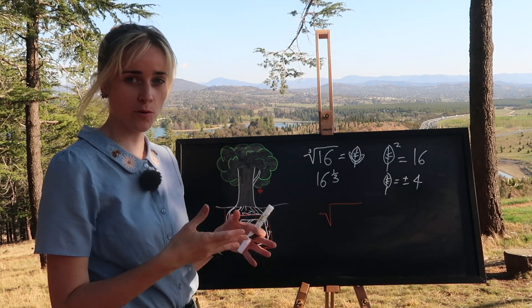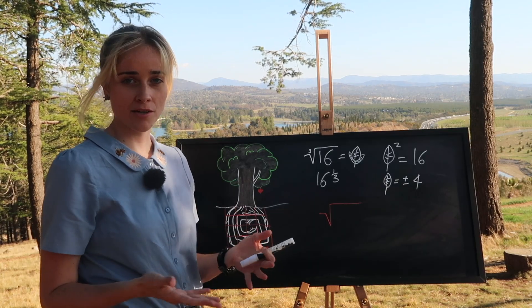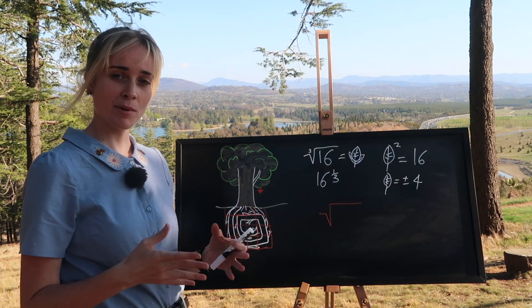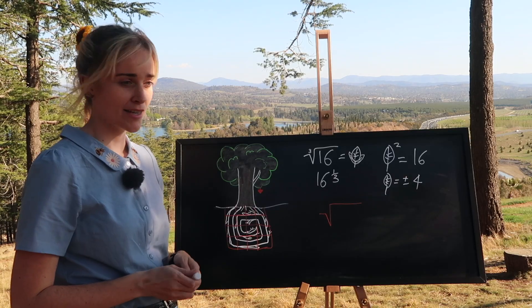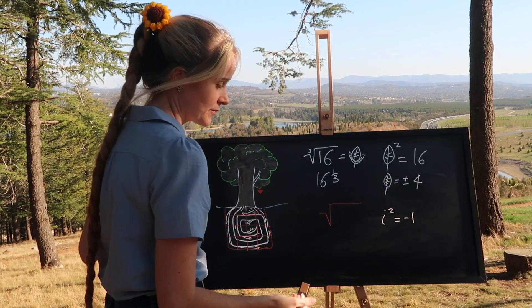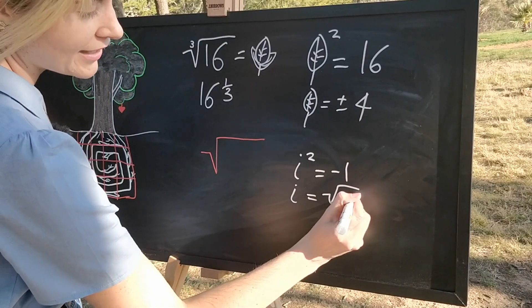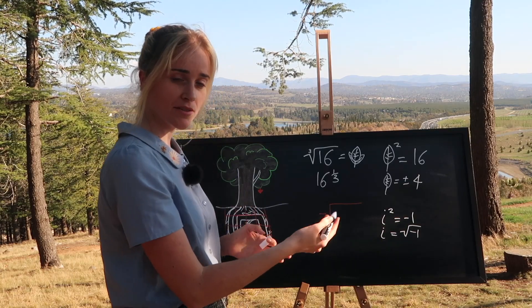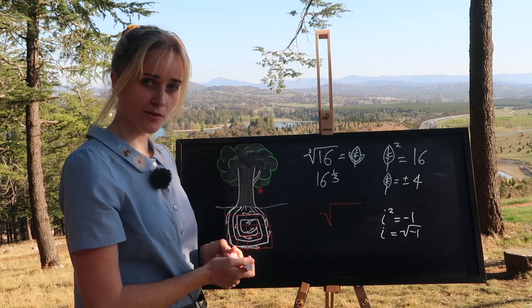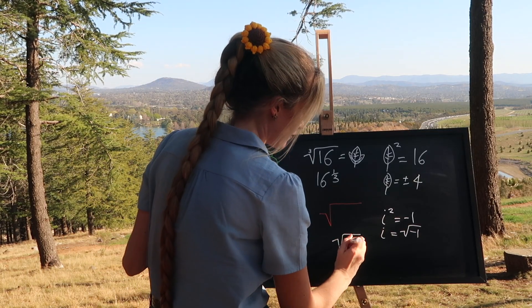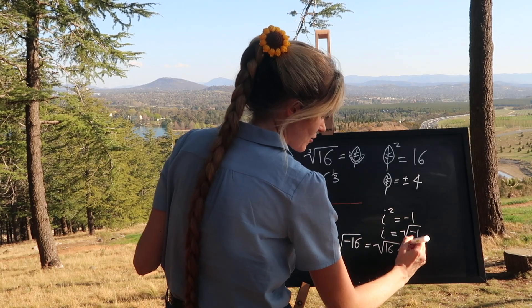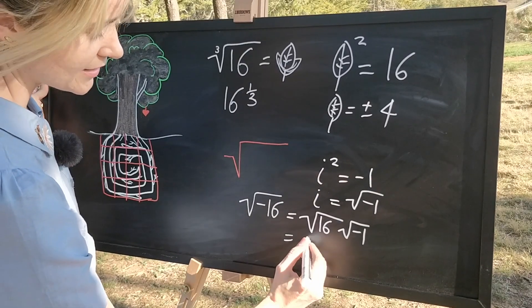Squaring any number, positive or negative, will give us a positive result. Squaring zero will give us zero. So there is actually no way for a negative number to have any real root. But we can make things more inclusive if we invite over our imaginary friends. If we introduce our friend i squared to be equal to minus one, then we would have that i is equal to the square root of minus one. Technically minus i would also be equal to the square root of minus one, but by convention we just take positive i to be our principal root. Then if we wanted to do the square root of minus 16, we could do that and it would give us the square root of 16 times the square root of minus one, leading us to an answer of 4i.